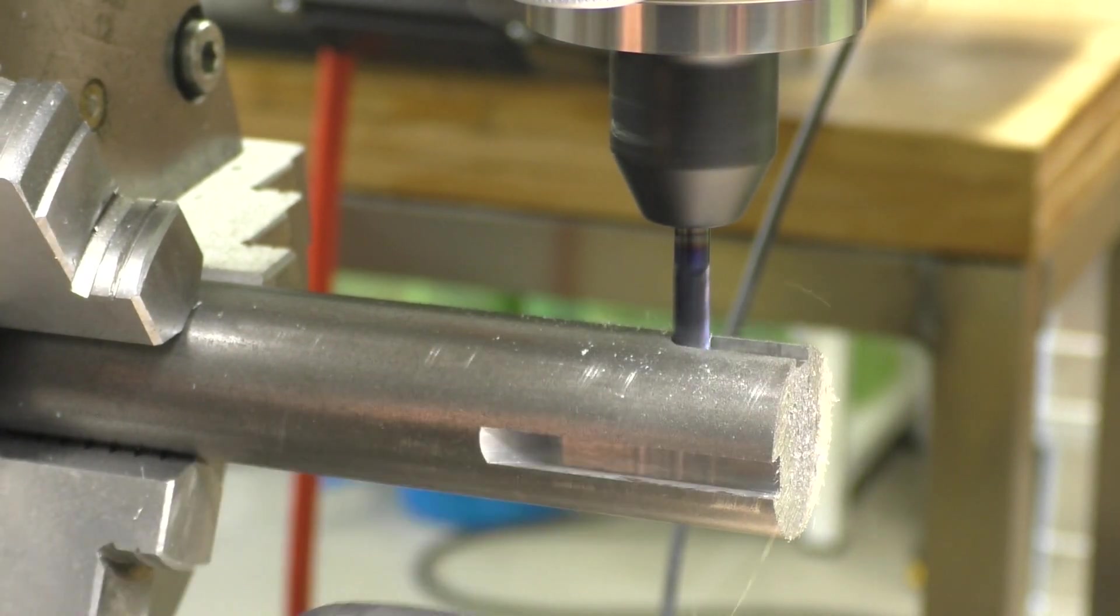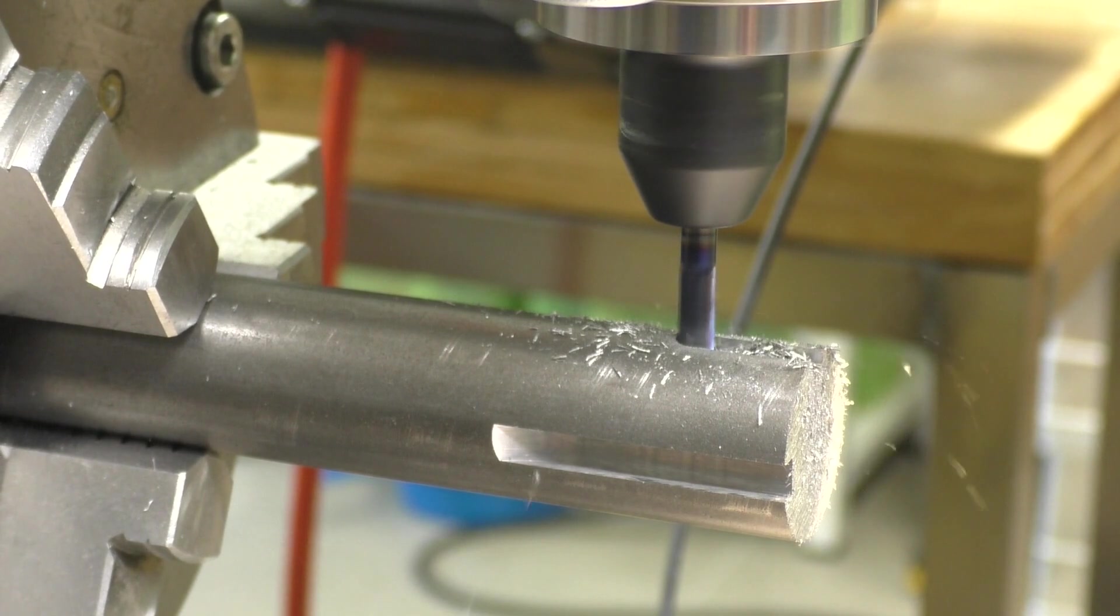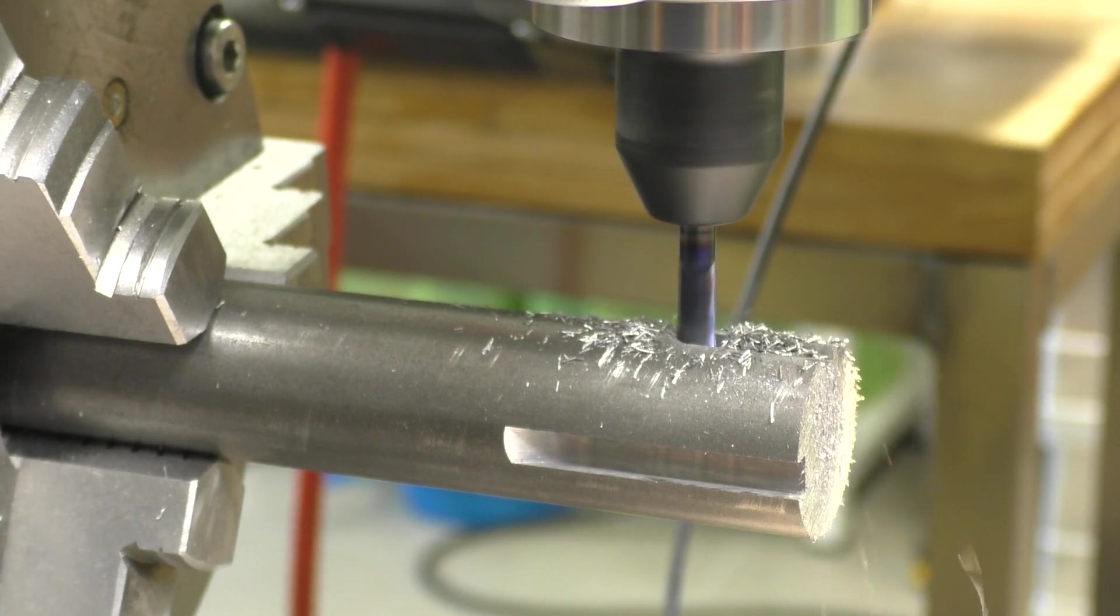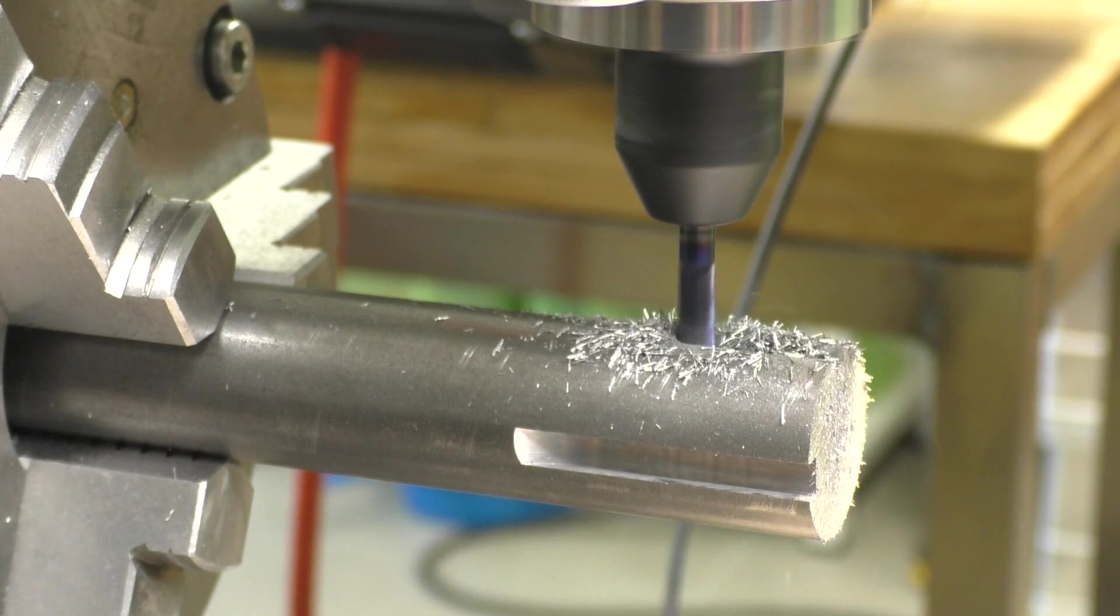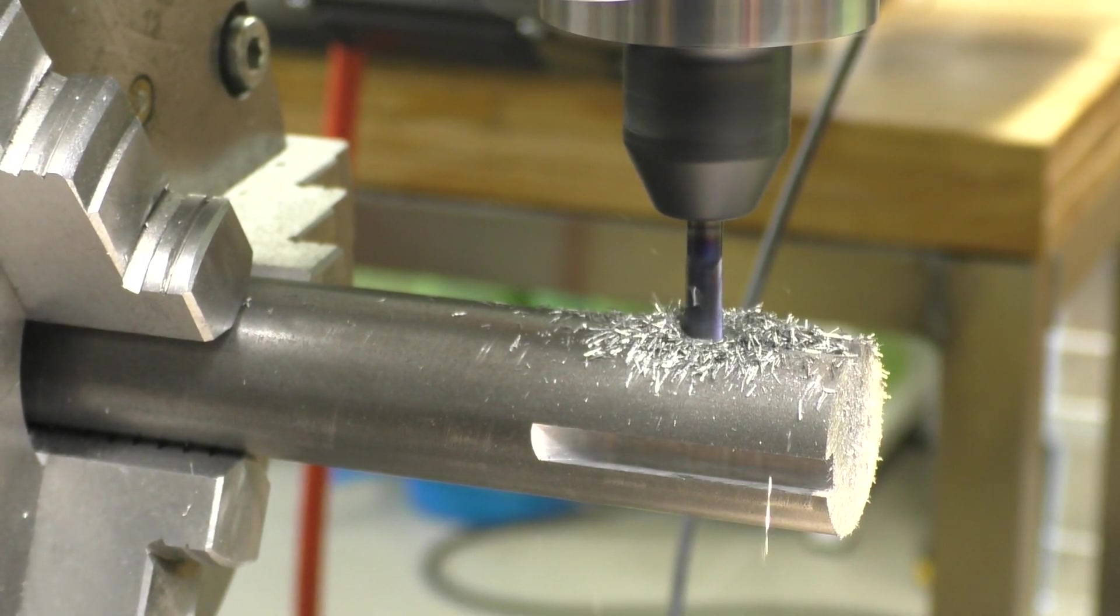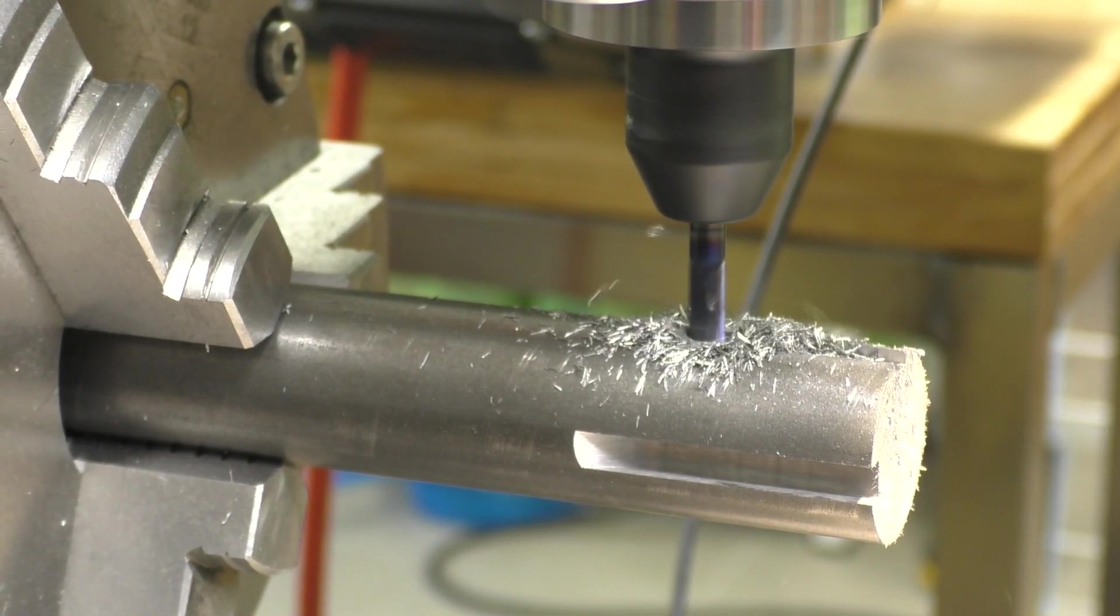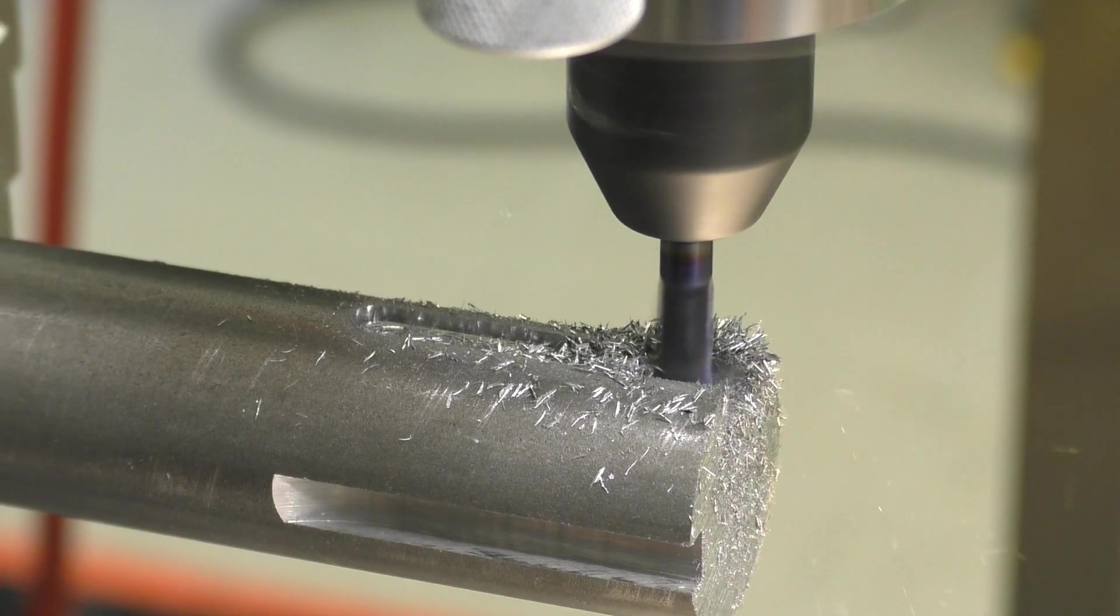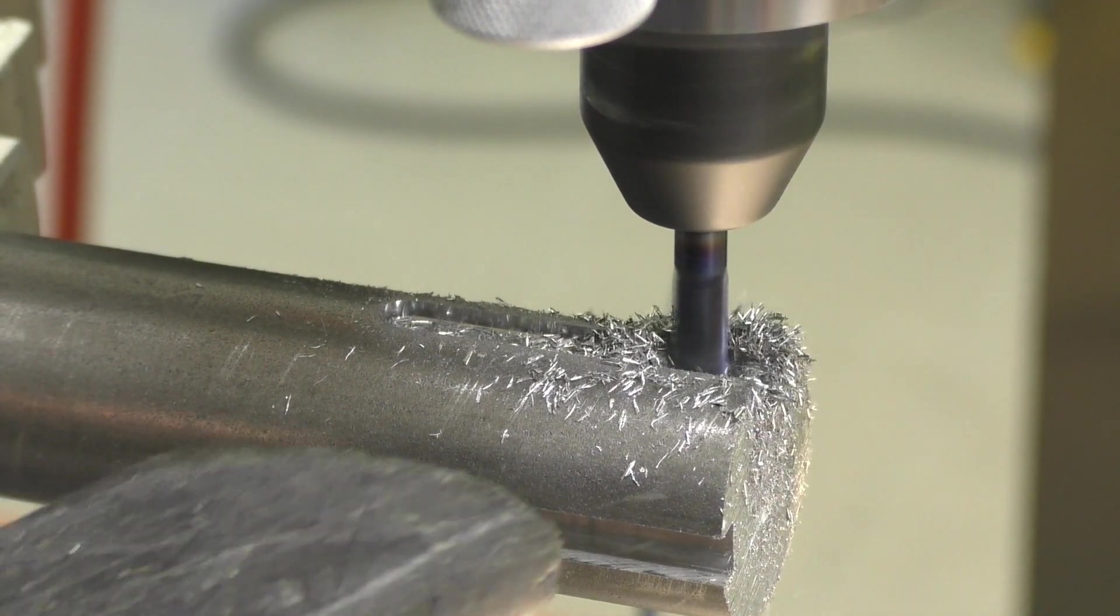We cannot work with cooling lubricant here because of the video. It is therefore a good idea to remove the chips again and again with a vacuum cleaner, because the chips in the event of a jam break off the cutter very quickly. It is a good idea to make the groove in several cuts. These solid carbide cutters break very easily. So don't stress, we're not in the industry where time is supposed to be money.